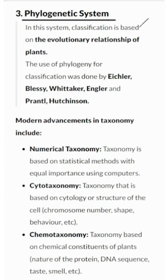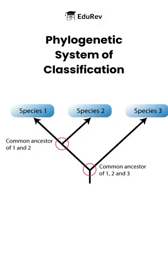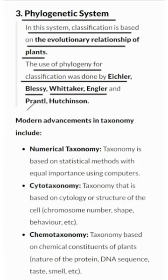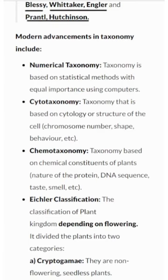Phylogenetic System: This system is like a family tree for plants, based on their evolutionary relationships — uncovering the ancestry of plants. Using phylogeny for classification was a revolutionary idea proposed by scientists including Eichler, Bessey, Whittaker, Engler, Prantl, and Hutchinson. These botanists paved the way for us to understand how plants are connected through evolution.